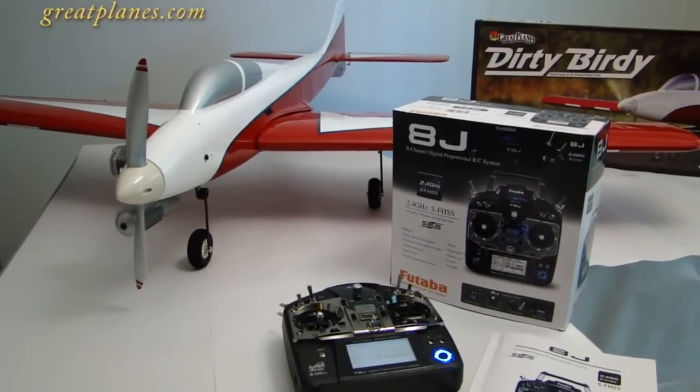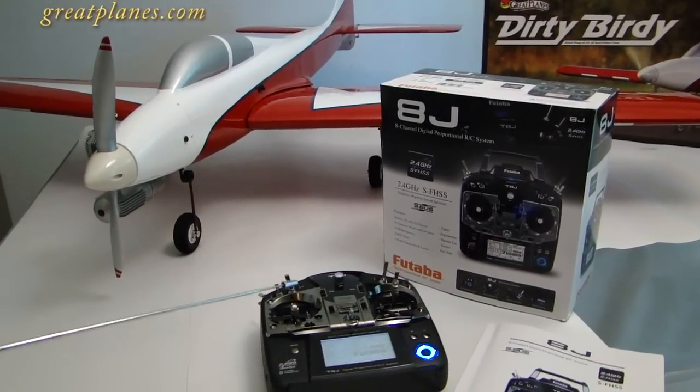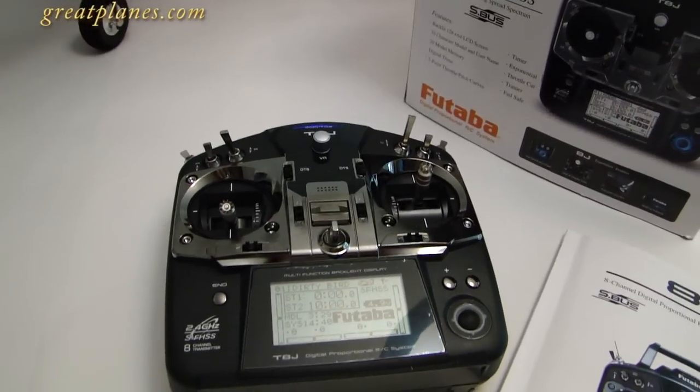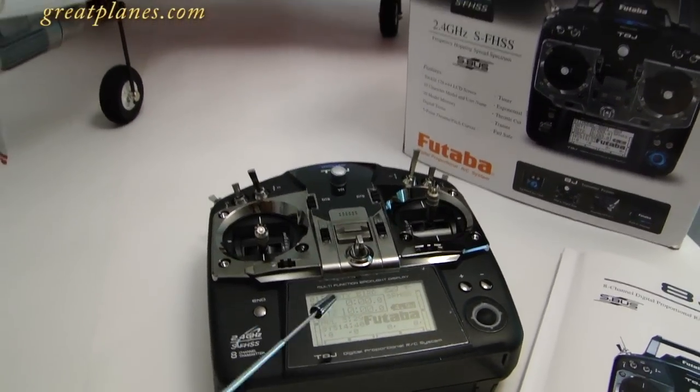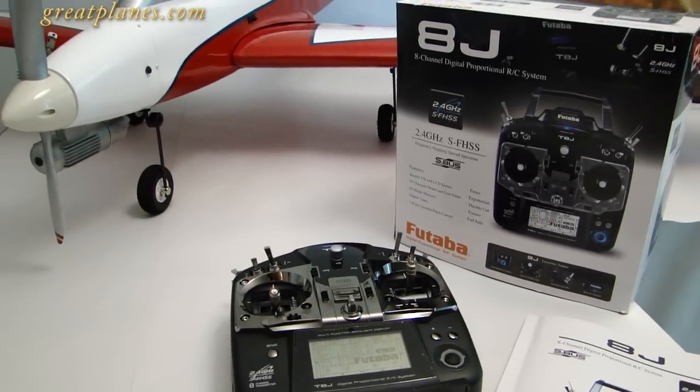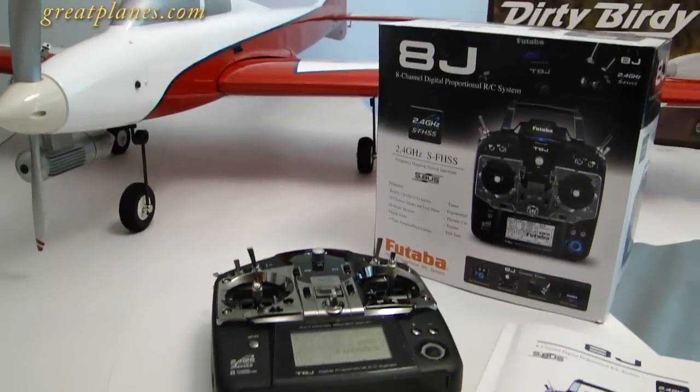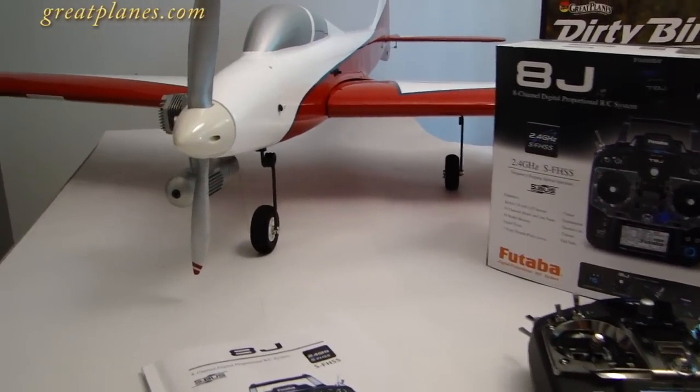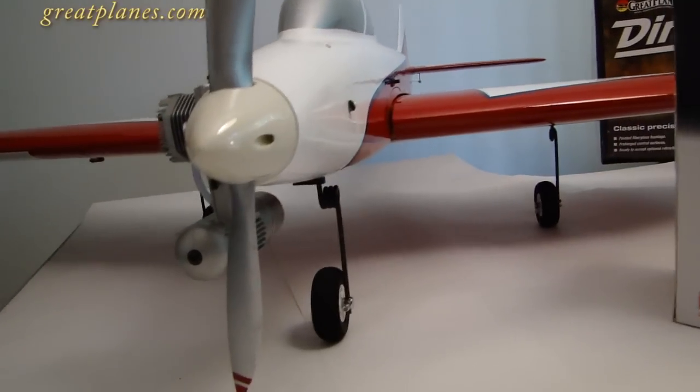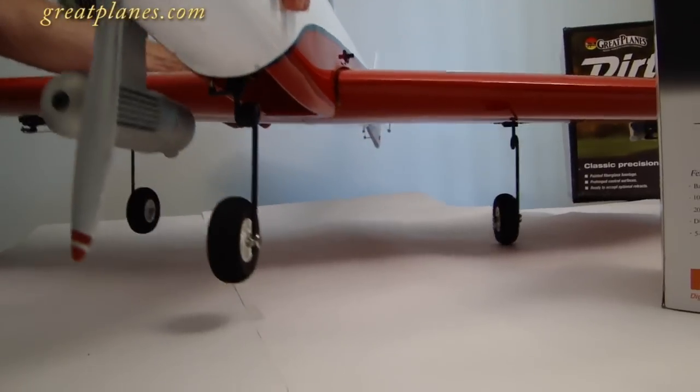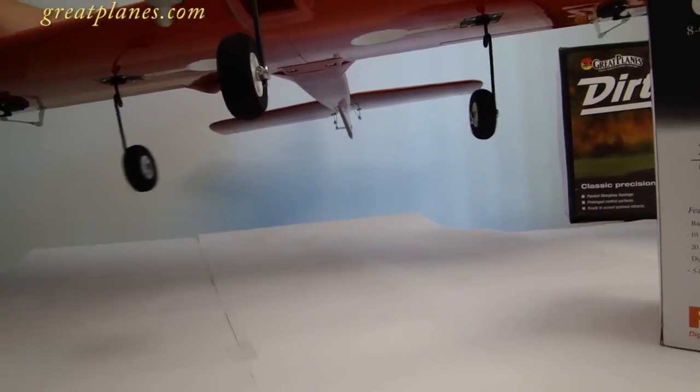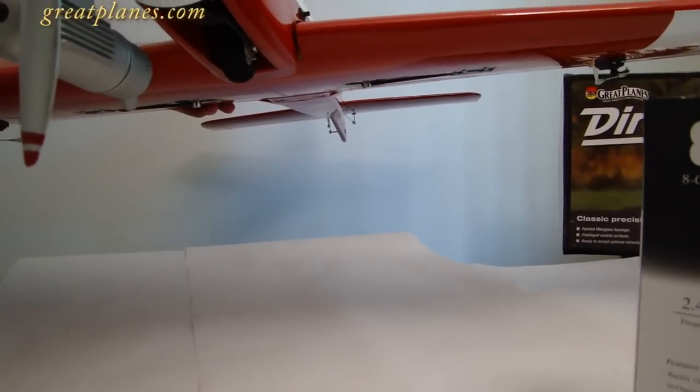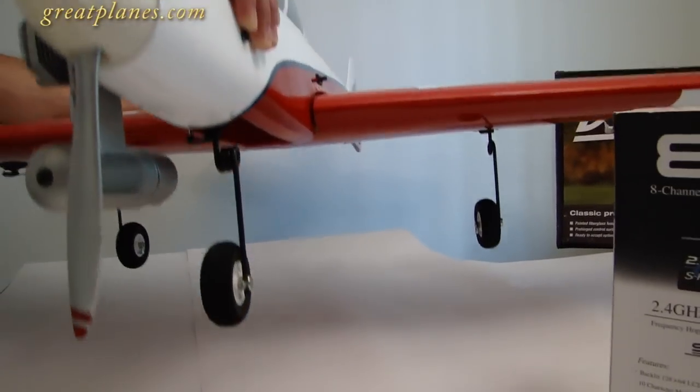All right everyone, we have the Dirty Birdie powered up with our Futaba 8J transmitter 2.4 gigahertz with the Futaba frequency hopping spread spectrum, backlit LCD, 20 model memory, and S-BUS compatible. So what we're going to do is go ahead and retract the landing gear and show you how it operates. As you can see, it goes real nice up into the wheel wells and the gear is down.